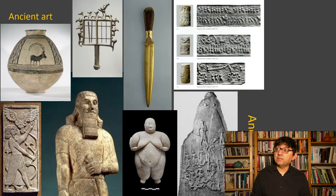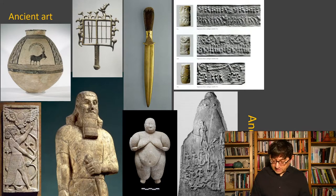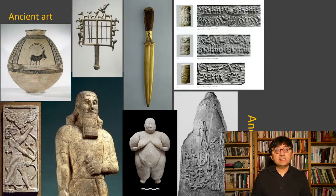Cylinder seals were a kind of ancient signature — a cylindrical instrument on which images are carved. If you roll your seal on wet clay, you create a visual signature to seal envelopes, objects, and containers of food. They were very important in the management of food and trade.